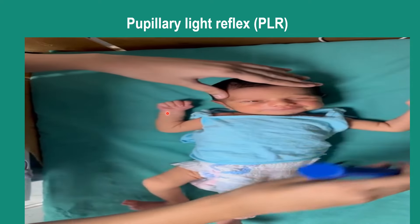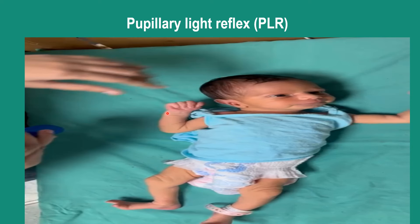The baby is blinking in response to the light and also turning the head toward the diffuse light. For both direct and indirect pupillary light reflex, we have to shine the torch light from the lateral position towards the pupil and observe the constriction of the pupil on the same side — direct pupillary light reflex — and in the opposite eye — indirect pupillary light reflex.